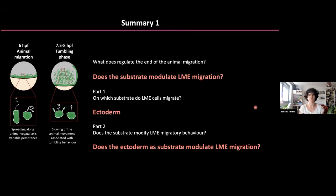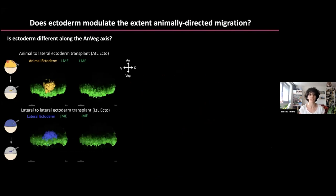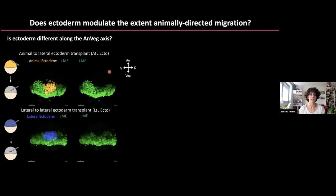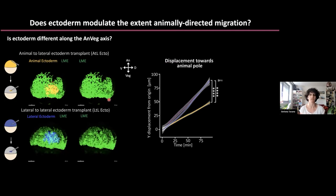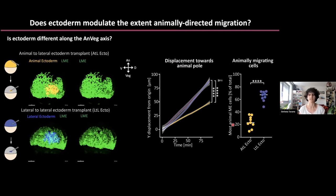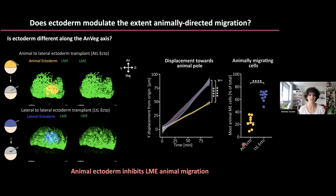If the substrate modulates migration, it could be because the substrate is not homogeneous — it has different properties. To test this, we performed transplantation experiments: we took ectoderm from the animal pole or the lateral side of a donor embryo, transplanted it to the lateral side of a host embryo, and observed how cells behaved when they encountered the transplanted ectoderm. As you can see here, cells that encountered animal ectoderm had difficulty moving towards the animal pole. The quantification shows a strong decrease in animal displacement and a decrease in the percentage of cells reaching the most animal part of the embryo before convergence — suggesting the animal ectoderm inhibits lateral mesendoderm animal migration.